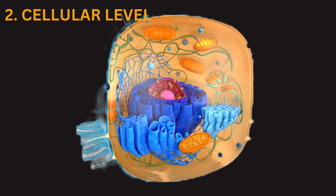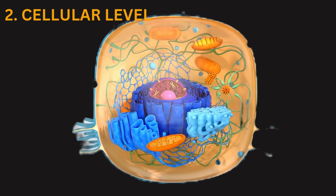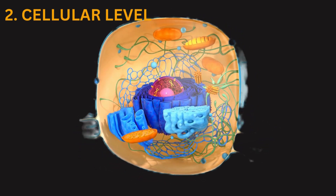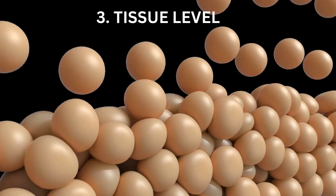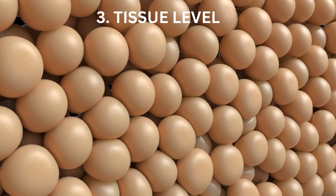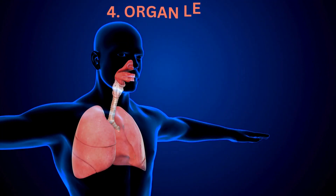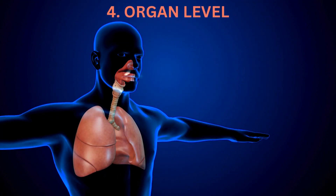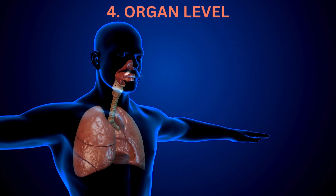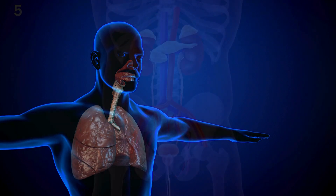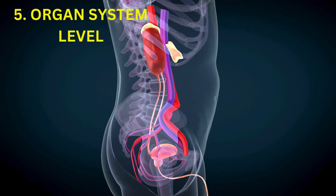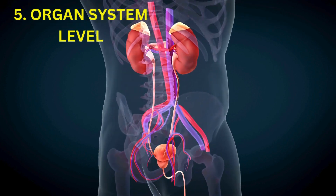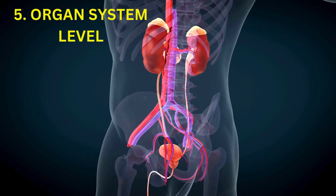2. Cellular level: cells are the basic structural and functional units of living organisms. 3. Tissue level: tissues are groups of similar cells working together to perform a specific function. 4. Organ level: organs are composed of different types of tissues working together to carry out specific functions. 5. Organ system level: organ systems are groups of organs that work together to perform a coordinated set of functions.